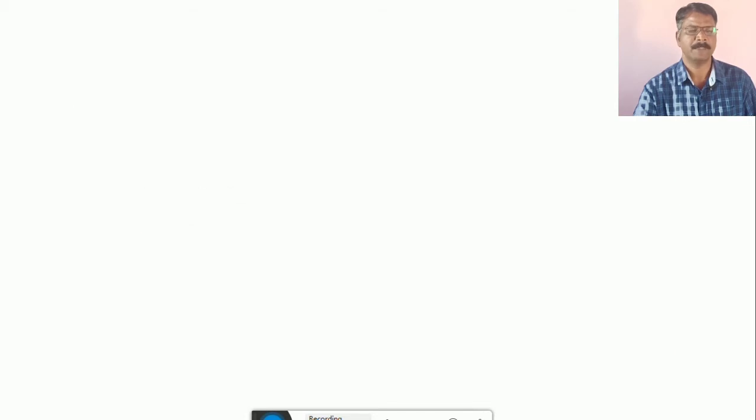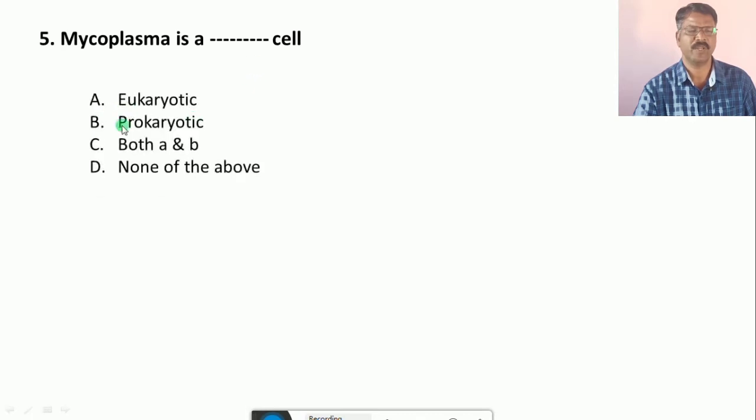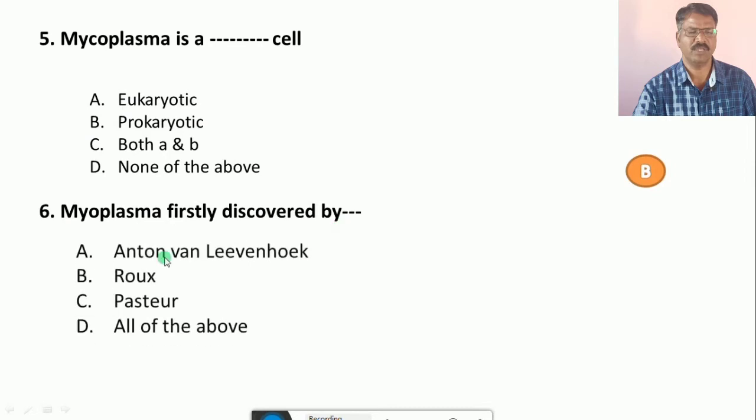Question number 5: Mycoplasma is a... Their options are A. Eukaryotic cell, B. Prokaryotic cells, C. Both A and B, D. None of the above. The correct answer is B, that is Prokaryotic cells. Question number 6: Mycoplasma firstly discovered by... Their options are A. Antoine van Leeuwenhoek, B. Roux, C. Pasteur, D. All of the above. The correct answer is C, by Pasteur.